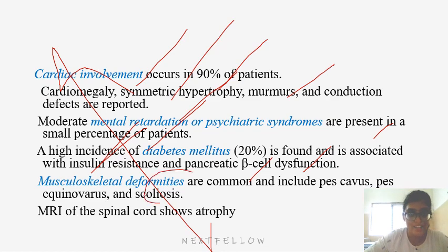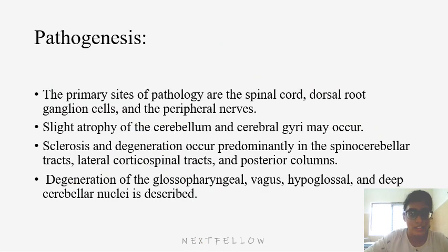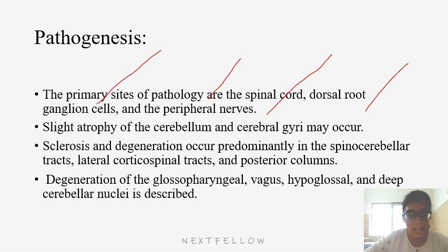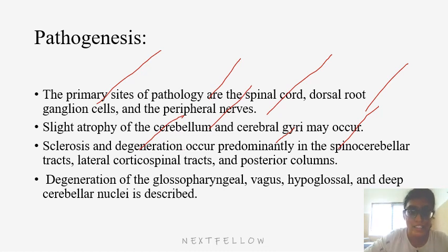MRI of the spinal cord shows atrophy — an important point. The primary sites of pathology are the spinal cord, dorsal root ganglion, and peripheral nerves, with slight atrophy of the cerebellum and cerebral cortex possible. Sclerosis and degeneration occur predominantly in the spinocerebellar tract, lateral corticospinal tract, and posterior columns. This explains cerebellar symptoms like nystagmus, titubation, dysarthria, and dysmetria, as well as posterior column loss of position and vibration sense.